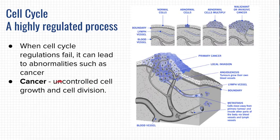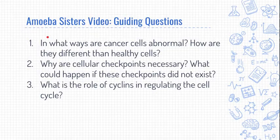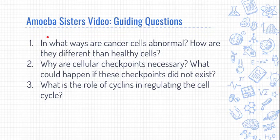In summary, cancer is uncontrolled cell growth and cell division, and it's a result of the failure of the regulation of the cell cycle. Now, pause this video and watch the Amoeba Sisters video. Answer the guiding questions in your notes document — I'm going to be checking these. The questions are: In what ways are cancer cells abnormal and how are they different from healthy cells? Why are cellular checkpoints necessary and what would happen if they didn't exist? And what's the role of cyclins in regulating the cell cycle?